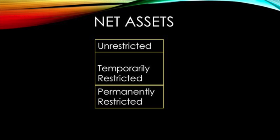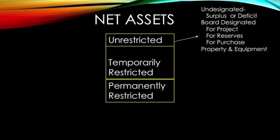These categories are divided due to the nature of the funds and the restrictions placed on them. Unrestricted assets are considered undesignated — they could be a surplus or deficiency from a previous fiscal year, funds that the board designated for a specific project, a cash reserve, a specific purchase, or property equipment. These are net assets with no restrictions, and therefore the funds can be utilized with great freedom.